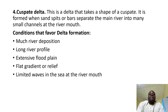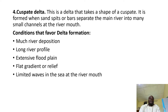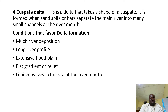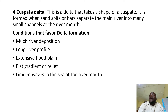Then we have the cuspate delta — a delta that takes the shape of a cusp. We studied these features also under coastal geomorphology. Cuspates are features that result from wave deposition on the coast; they are protruding features of deposited raw materials extending from the mainland into the sea, forming finger-like features. The cuspate delta is not common. The three common types are estuarine delta, arcuate delta, and bird's foot delta.